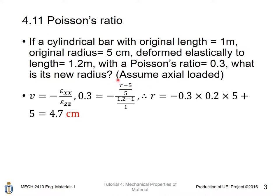For the transverse direction, we can define the strain, which is the radius direction, as equal to (new radius minus 5) over 5 — 5 is the original radius. Rearranging, we get R equal to this value, and the unit for R is cm, because we used cm in this term. To be reminded, strain is actually dimensionless because it is equal to length over length, and the units cancel each other.